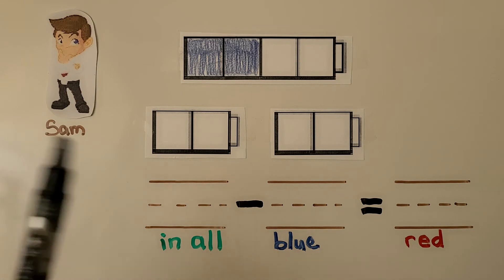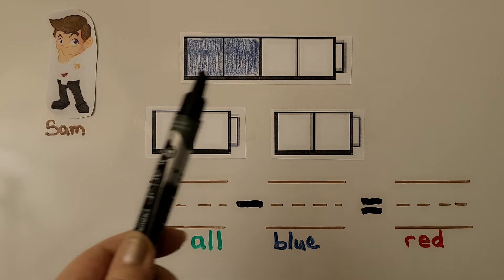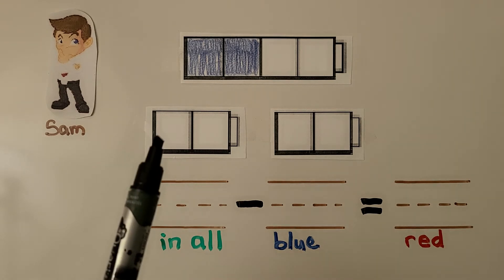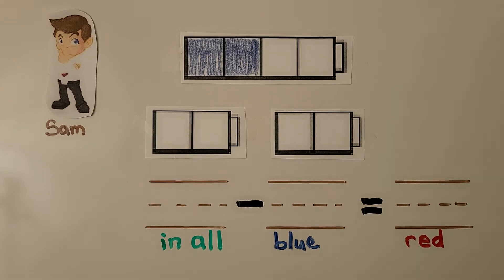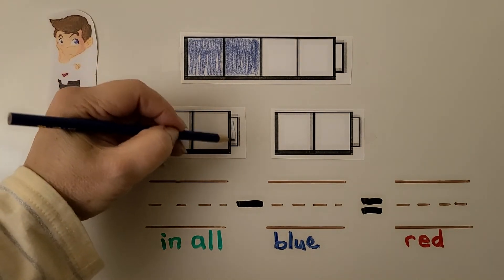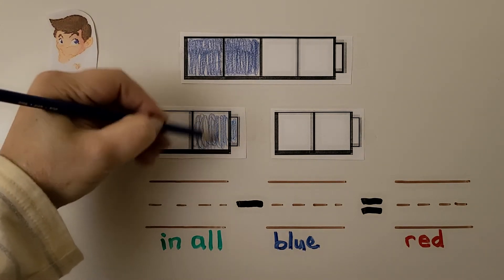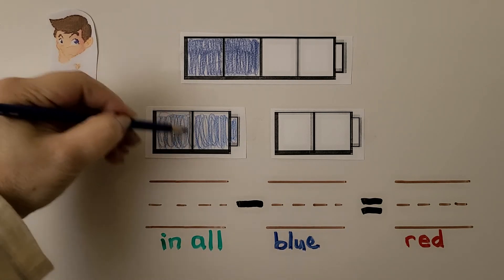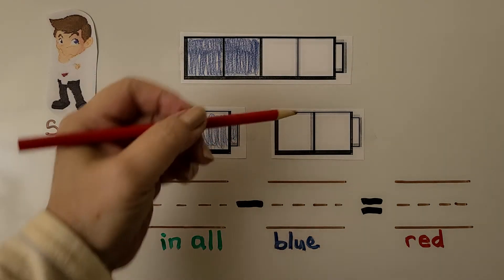Here's Sam. He has a cube train with four cubes. Two are blue and the rest are red. How many of Sam's cubes are red? We can take it apart and color the two blue ones. These are the two blue ones, and we can see that these must be the red ones.